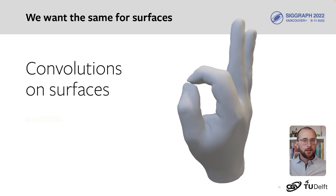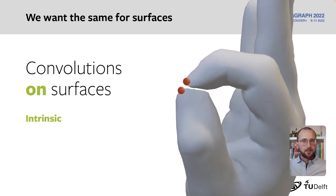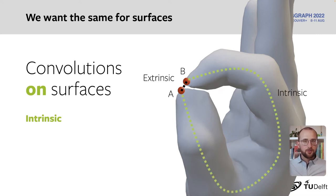In our work, we try to create intrinsic convolutions. A clear example of this intrinsic viewpoint is computing distances on shapes. An extrinsic approach would measure the distance directly from A to B. An intrinsic approach would move along the surface, giving you a geodesic distance. Intrinsic operations are robust to isometric deformations, deformations that don't stretch or squeeze the surface.